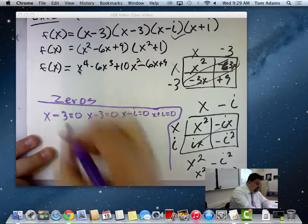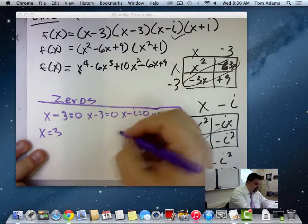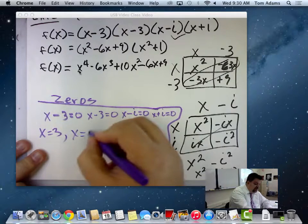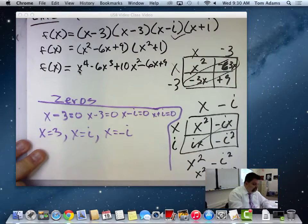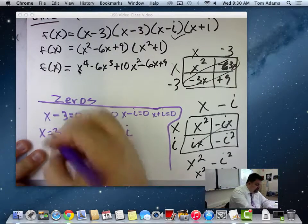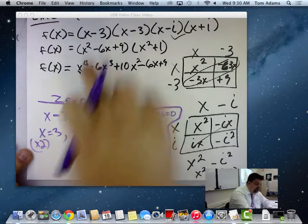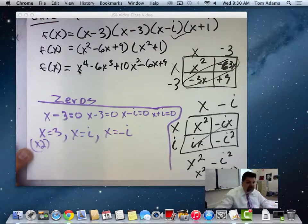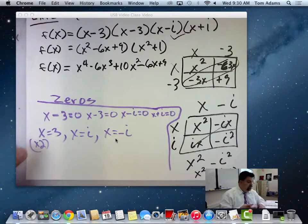Okay. So this is going to be x equals 3, multiplicity 2, right? Okay, that's for both of them. And then this is going to be x equals i and x equals -i. So now this is multiplicity 2, right? So this occurs twice. So I have a fourth-degree polynomial, which means I should have four solutions. So I've got two solutions of three, and then I have two complex solutions.